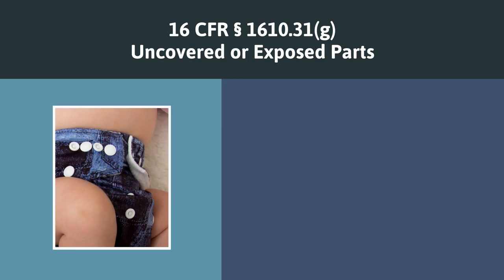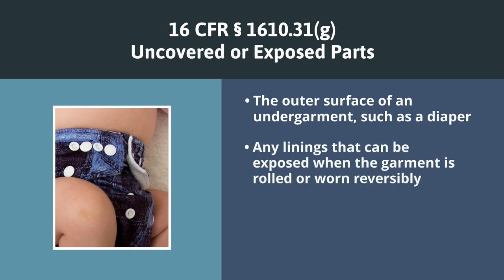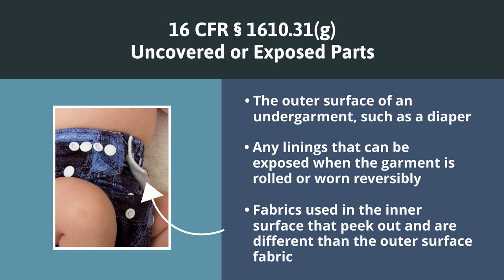Part 1610 applies to uncovered or exposed surfaces of an article of wearing apparel. The outer surface of an undergarment such as a diaper is considered an uncovered or exposed part of the garment. Any linings that can be exposed when the garment is rolled or worn reversibly are examples of exposed parts. Fabrics used in the inner surface that peek out the side near the leg holes and are different fabrics than the outside will also need to be tested.